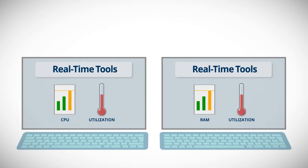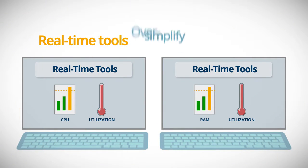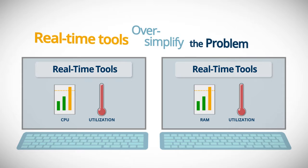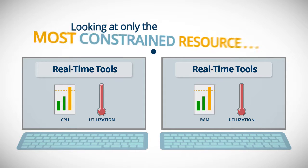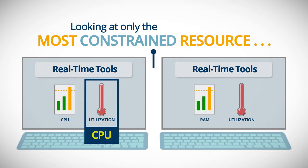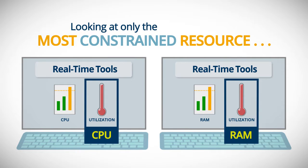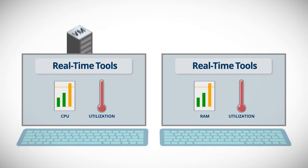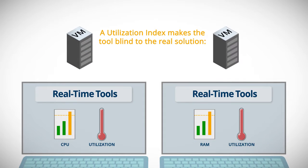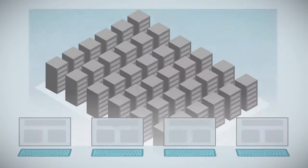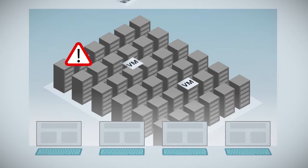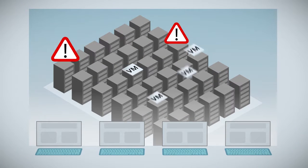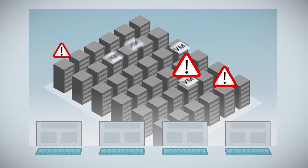Even worse, in order to respond quickly, real-time tools oversimplify the problem. For example, tools that only look at the most constrained resource to create a simplified utilization index are blind to the real solution, and result in workloads being put in the wrong place and being moved over and over again.